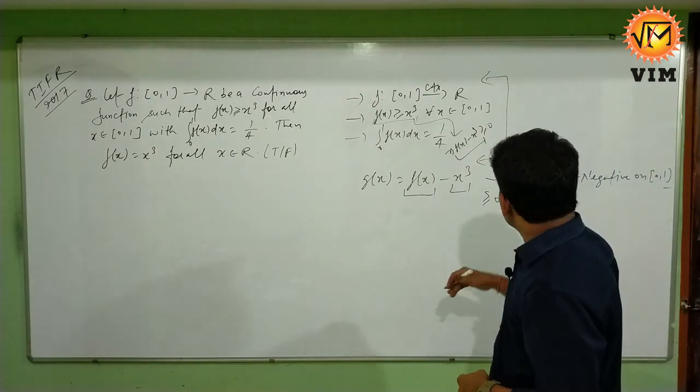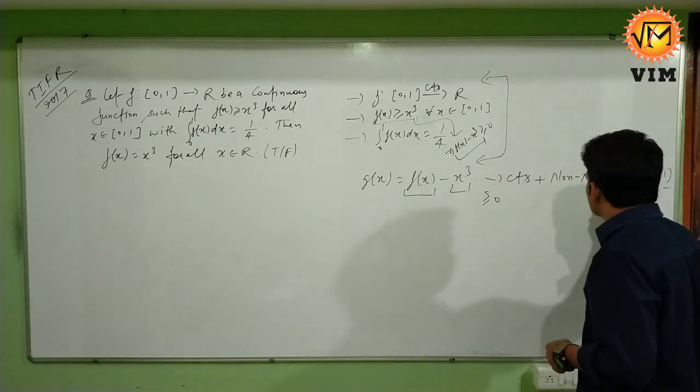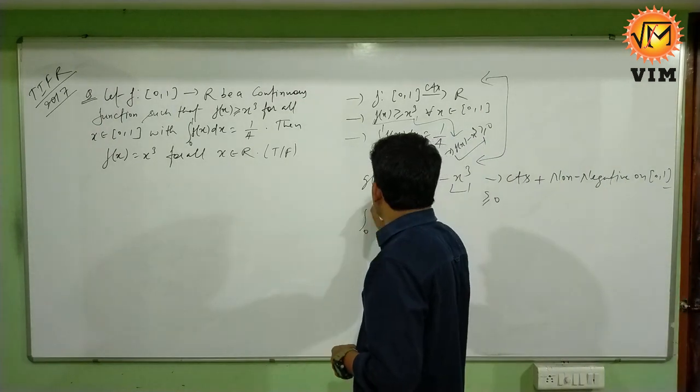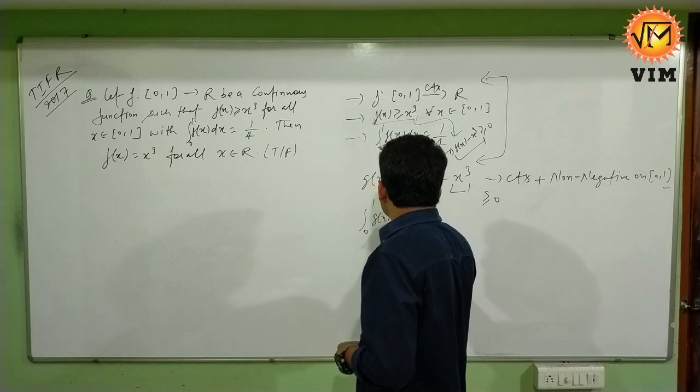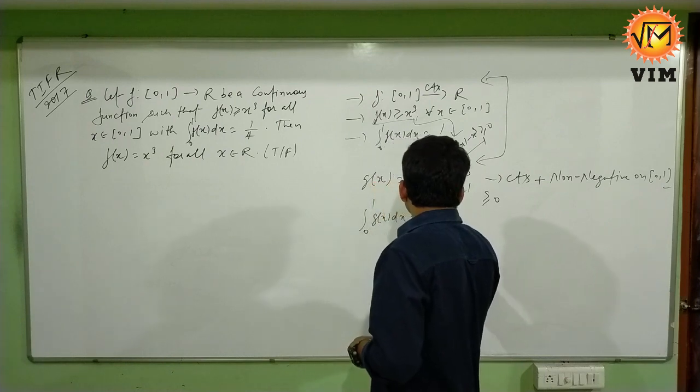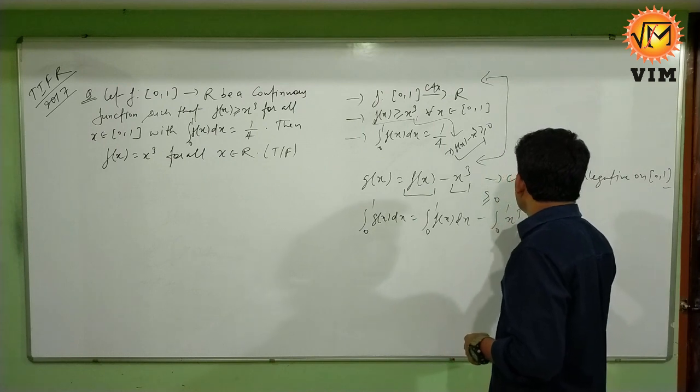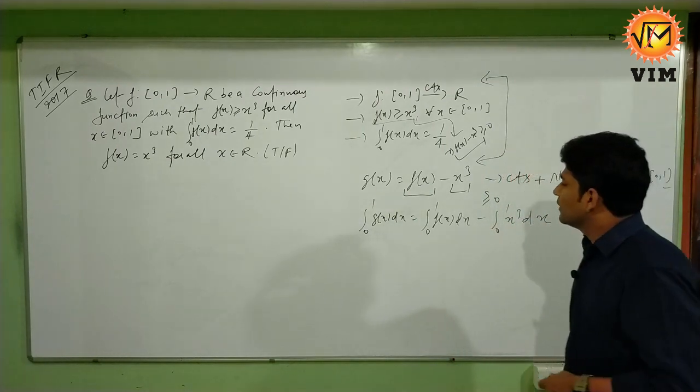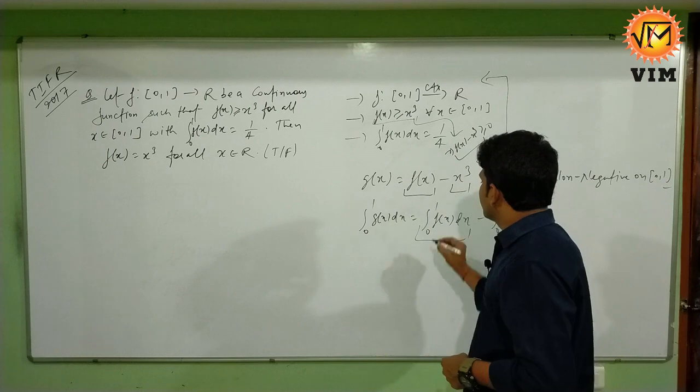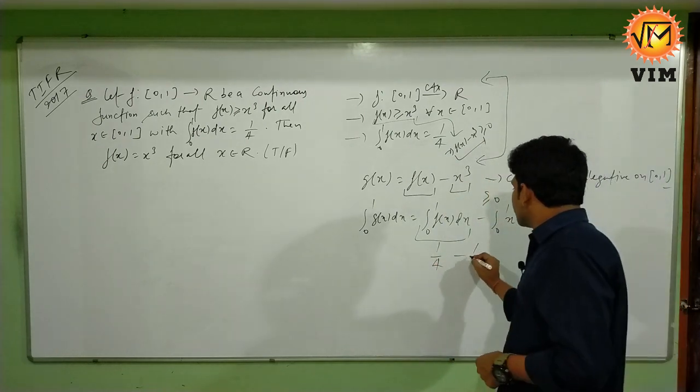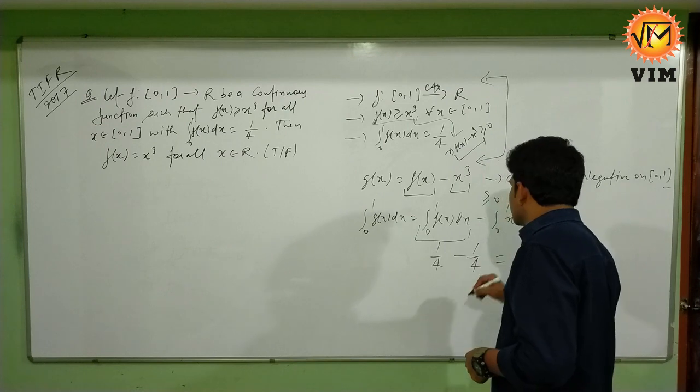If g(x) is a continuous and non-negative function on closed interval [0,1], then we can integrate it from 0 to 1. ∫₀¹ g(x)dx equals ∫₀¹ f(x)dx minus ∫₀¹ x³dx. This is 1/4 from the given information, and after calculating we can find it is also 1/4, so it is equal to 0.